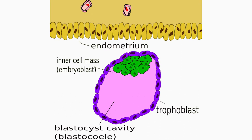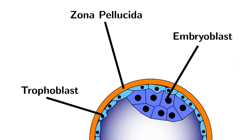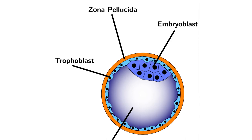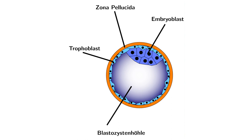With further compaction, the individual outer blastomeres of the blastocyst become indistinguishable and are still enclosed within the zona pellucida. The inner mass of cells differentiates to become the embryoblast. This polarization leaves a cavity, and the structure is now termed the blastocyst.